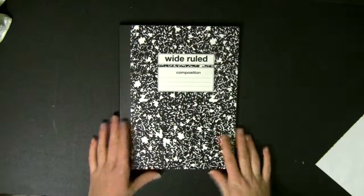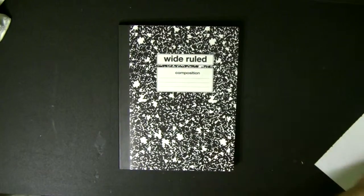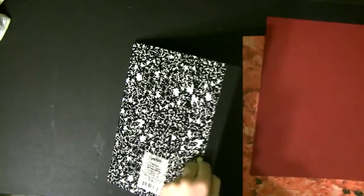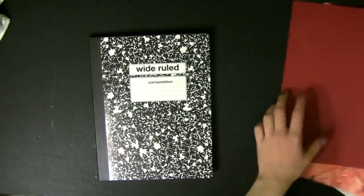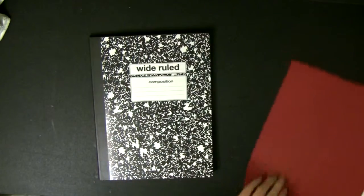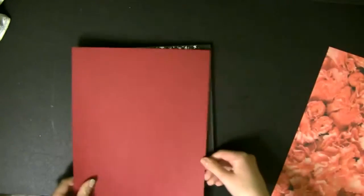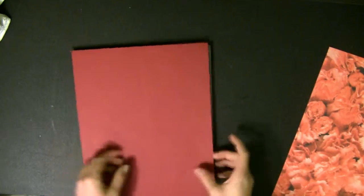So first I'm going to show you how to decorate your notebooks using scrapbooking paper. First you will need your notebook. I'm using a composition book just for demonstration. However, it's almost the same as spiral. And some paper - because I'm using a composition book, I need two pieces of paper. And to save my pretty pattern paper, I'm going to just use a cardstock piece in a color that matches. So you will see it will look something like this when it is finished.